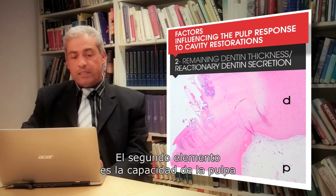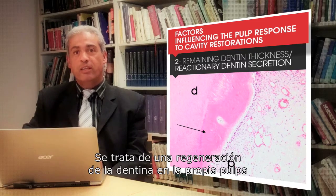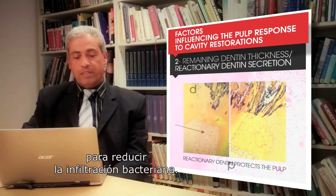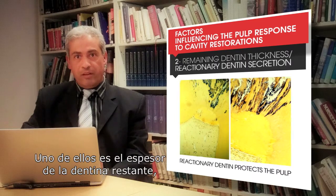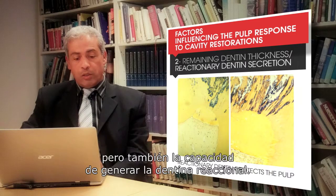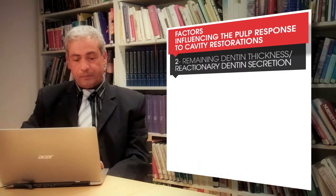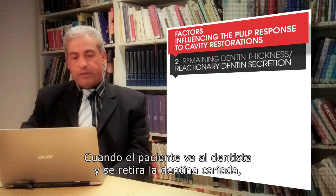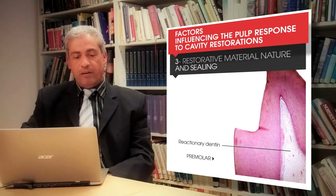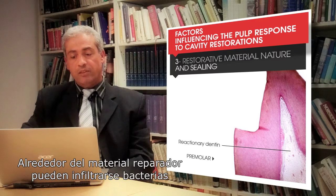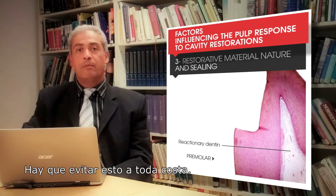The second element is the capacity of the pulp itself to respond by secreting reactionary dentin — a dentin regeneration within the pulp to decrease bacterial infiltration. This depends on different factors: one is the remaining dentin thickness, that is the depth of the cavity, but also the capacity to secrete reactionary dentin. When the patient goes to the dentist and carious dentin is removed, restorative material is placed, and around it bacteria might infiltrate the cavity and reach the pulp to induce an inflammatory reaction. This has to be absolutely avoided.